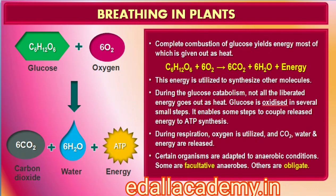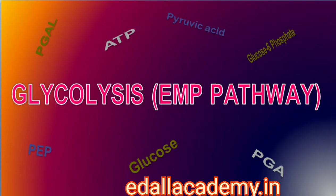The complete combustion of glucose, which produces CO2 and H2O as end products, yields energy most of which is given out as heat. If this energy is to be useful to the cell, it should be able to utilize it to synthesize other molecules the cell requires. The strategy is to catabolize the glucose molecule so that not all the liberated energy goes out as heat. The key is to oxidize glucose not in one step but in several small steps, enabling some steps to be just large enough so that the energy released can be coupled to ATP synthesis. This, essentially, is the story of respiration.